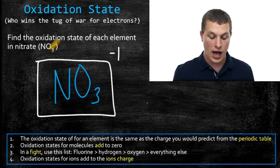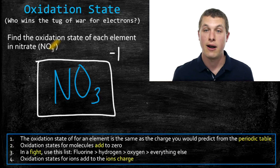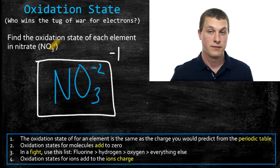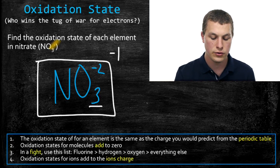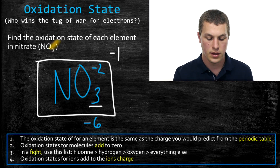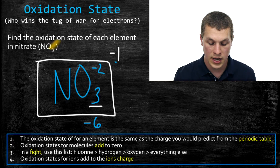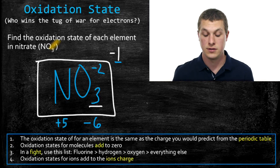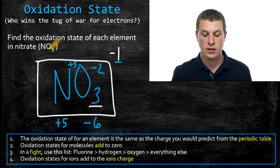Again, we assign oxidation states based on the periodic table, and oxygen beats out nitrogen because it's higher on our priority list. So oxygen has an oxidation state of minus two. We have three oxygens, so negative two times three gives a total negative oxidation state of negative six. This time we need the total to add up to negative one, not zero. So our nitrogen must be plus five, because plus five minus six gives us negative one. With only one nitrogen, the oxidation state of nitrogen is plus five, and oxygen is minus two.